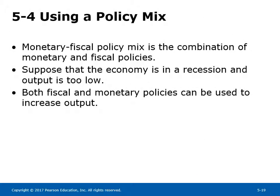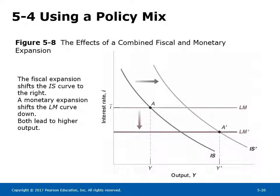Section 5-4: Using a Policy Mix. The monetary-fiscal policy mix is the combination of monetary and fiscal policies. Suppose the economy is in a recession and output is too low — both fiscal and monetary policies can be used to increase output. Figure 5-8 shows the effects of a combined fiscal and monetary expansion: the fiscal expansion shifts the IS curve to the right, and the monetary expansion shifts the LM curve down, both leading to higher output. The economy moves from point A to A' and equilibrium output increases from Y to Y'.